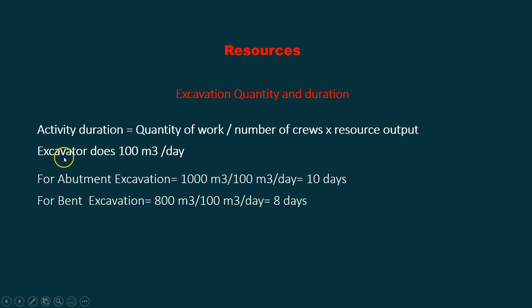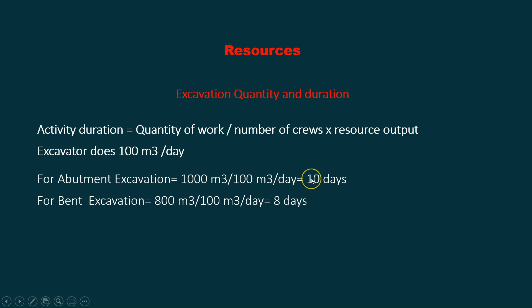If you have two excavators that can do 200 cubic meters per day, the abutment excavation equals 1000 divided by 200, giving you five days.